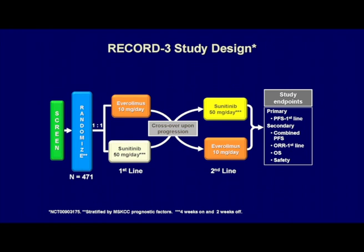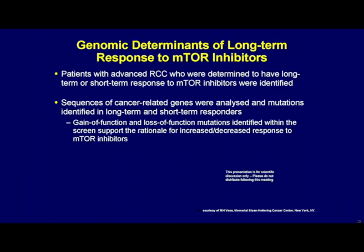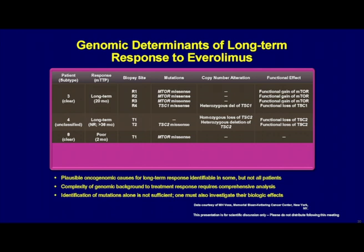There have been attempts to further understand this through pharmacogenomics. Martin Voss from Memorial looked at patients with advanced RCC determined to have long-term or short-term responses to mTOR inhibitors — the ends of the spectrum — and tried to analyze their cancer-related genes to find certain predictors, looking for gain-of-function or loss-of-function mutations. He was able to show a variety of different mTOR missense mutations or TSC1 mutations that may have put some patients at benefit for mTOR inhibitors. There were genomic determinants of long-term response to everolimus in this setting. This brings hope that with further study, genetic testing on tumors may allow us to identify a group of patients that may benefit from mTOR inhibitors.